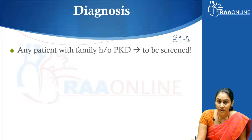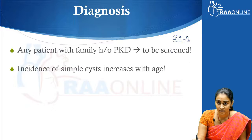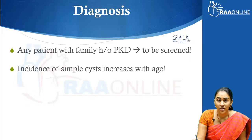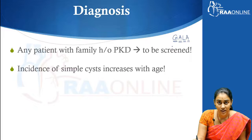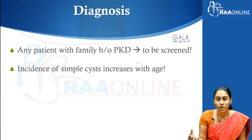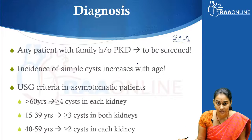Any patient with a family history of polycystic kidney disease definitely needs to be screened. We should remember that the incidence of simple cysts increases with age, so anybody with a renal cyst on ultrasound is not automatically a candidate to be suspected of polycystic kidney disease. Anybody with a family history, yes — but always remember simple cysts increase with age, which is why it is very common to find incidentally picked-up renal cysts in older patients.